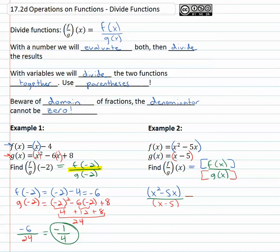Factor first. In the numerator you see a greatest common factor of x, so we have x times x minus 5 over x minus 5. And now we do see those x minus fives divide out quite nicely, and we're just left with simple x.